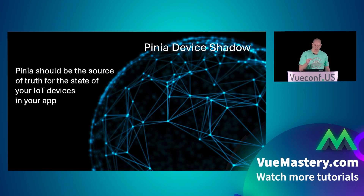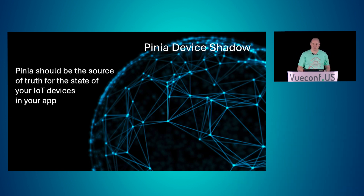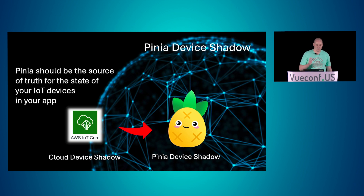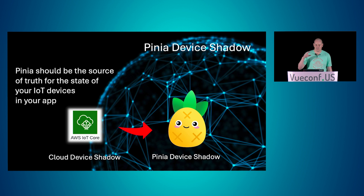The point I would like everyone to grasp here is that Pinia can be the source of truth for the state of your IoT devices. It's actually a very similar pattern to what we were doing with AWS IoT Core — we were creating a cloud device shadow, a virtual representation of all of our physical devices. We're cascading that shadow now into Pinia, so we're creating a shadow of a shadow. That way, your front-end web application has a very close source of truth for all of its data that it can instantly read. You can really do whatever you want with it on your front-end web application.